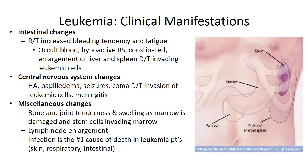Central nervous system changes include headache, papilledema, seizures, and coma — all due to leukemic cells invading brain tissue, possibly leading to meningitis. Bone and joint tenderness and swelling occur from bone marrow damage by leukemic cells. Lymph node enlargement can also occur. Importantly, infection is the number one cause of death in leukemia patients, with skin, respiratory, and intestinal infections being the most common sites.